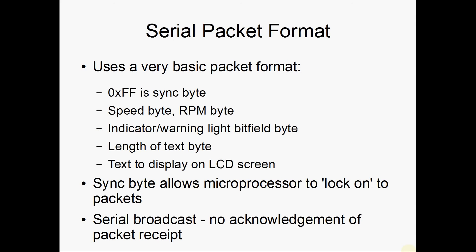The serial packet uses quite a basic format. It uses the value 0xFF — all ones — for the sync byte. Then the data bytes follow for the speed and the RPM. The indicator and warning lights are packed into a bit field. And then the text is sent through, prefixed by the length of the text. The sync byte allows the microprocessor to lock on to the beginning of the packets.